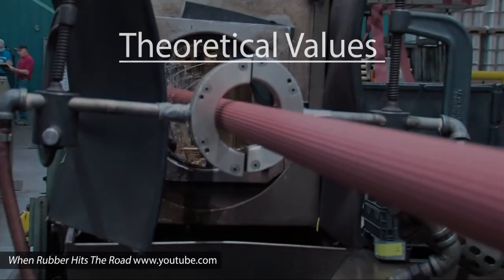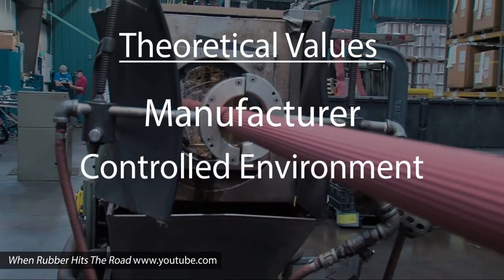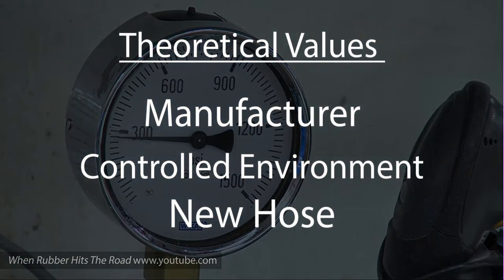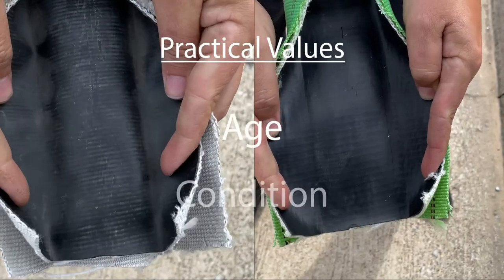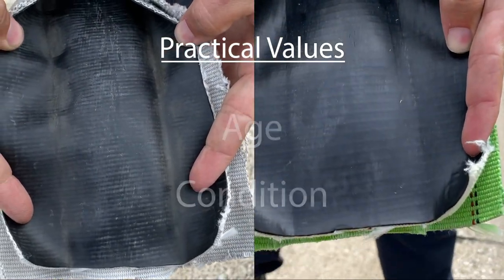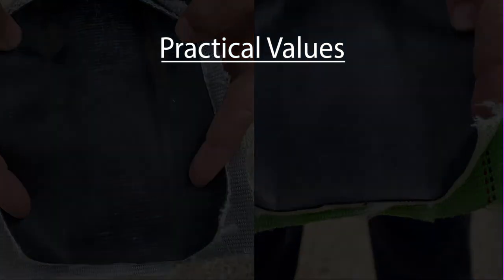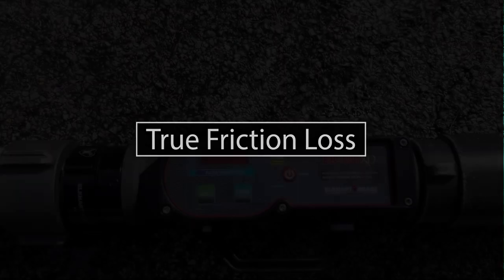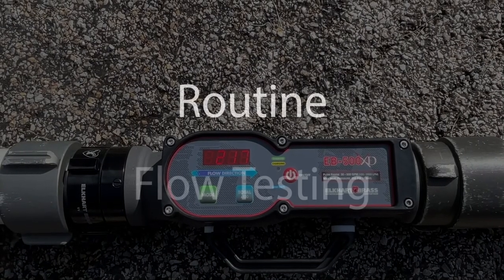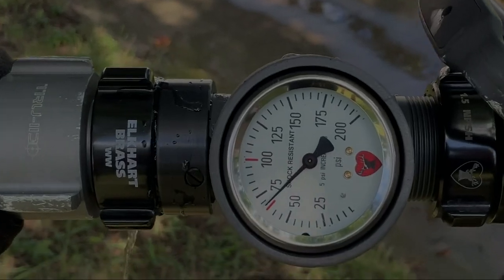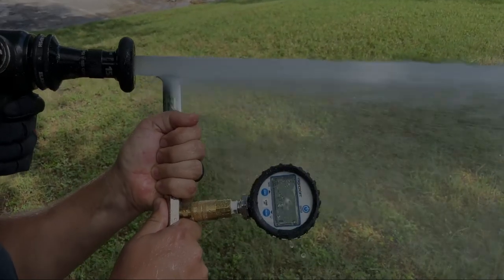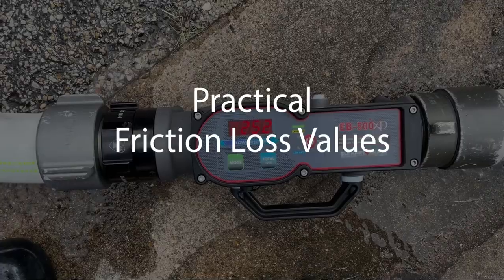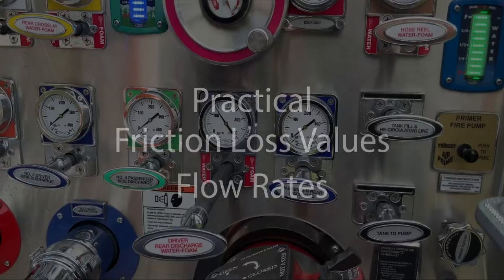There is one caveat to remember when calculating theoretical friction loss based on hose coefficients. These values are obtained by the manufacturer in a controlled environment using brand new hose. Depending on the age and condition of your current hose, it is very likely that the true friction loss for your hose will vary significantly from theoretical models. The only way to truly identify required pump pressures, adequate volume, and accurate friction loss values is to perform routine flow testing of your apparatus. This allows operators the opportunity to obtain practical friction loss values and flow rates at a variety of pump pressures and hose lengths.